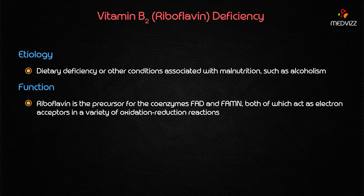Riboflavin is a precursor for the coenzymes FAD (flavin adenine dinucleotide) as well as FMN (flavin mononucleotide), both of which act as electron acceptors in a variety of oxidation-reduction reactions. Both FAD and FMN take part in many cycles, especially in the citric acid cycle as well as in the electron transport chain.